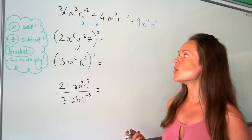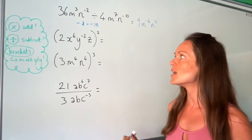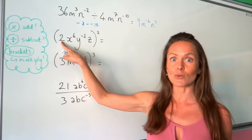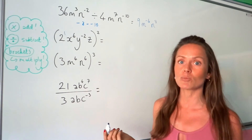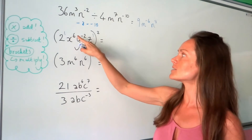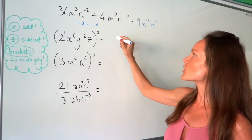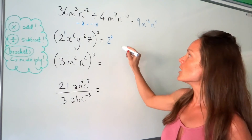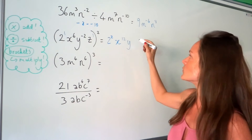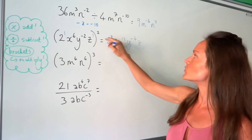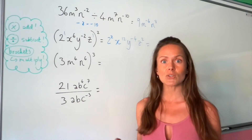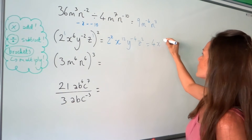This next one trips a lot of people up. They see the brackets and think to multiply the powers, but they forget about the number inside the brackets. Remember, this squared affects everything inside, including the number two which has an invisible power of one. So you multiply every single power inside the brackets by two: one times two is two for x, six times two is twelve for y, negative two times two is negative four for z, and one times two is two for the constant. Then simplify: two squared is four.